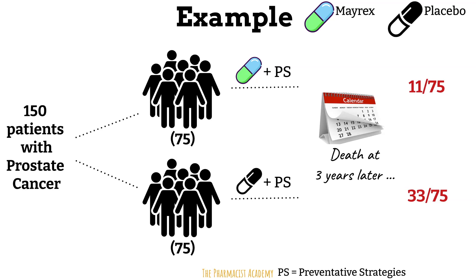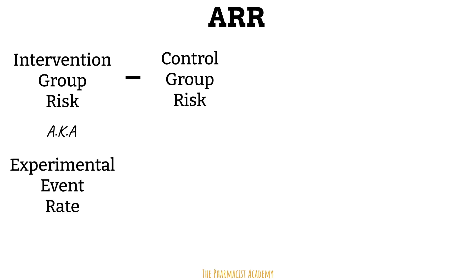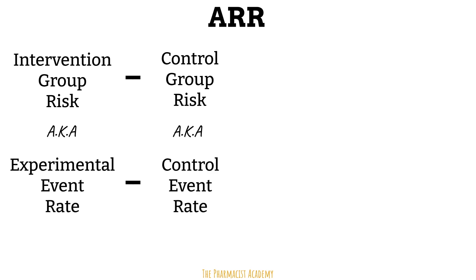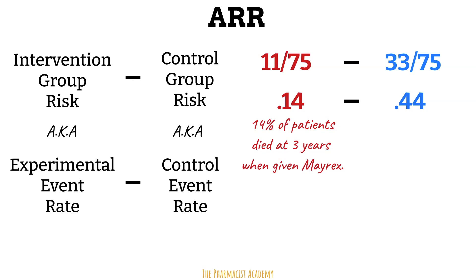With these numbers, we can now begin to calculate the absolute risk reduction. The intervention group risk is also known as the experimental event rate, defined as the proportion of patients in the experimental treatment group observed to experience the outcome of interest. We do the same calculation for the placebo, known as the control event rate. The experimental event rate is 11 over 75, which equals 0.14 or 14%, and the control event rate is 33 over 75, which equals 0.44 or 44%.